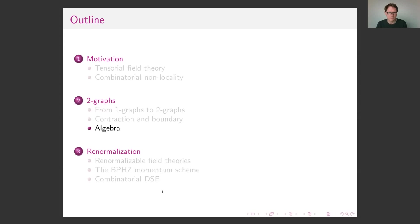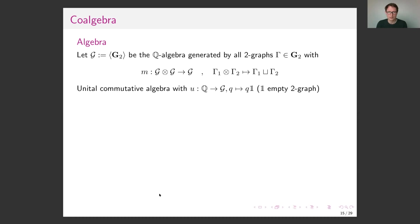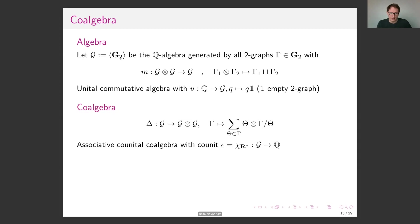Coming to the algebraic structures: this goes along lines you all know from defining the Connes-Kreimer algebra. You generate an algebra by a set of graphs — now we take all two-graphs — defining a Q-algebra with the usual multiplication by union. The co-product is simply the sum over subgraphs tensored with the contraction of the subgraph. This gives a co-algebra, in fact a bi-algebra, and this works completely parallel to one-graphs. As an example, you contract a graph of one edge and get an interesting contraction; contract the graph itself and get the residue.